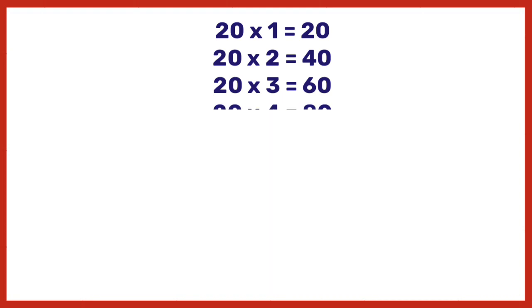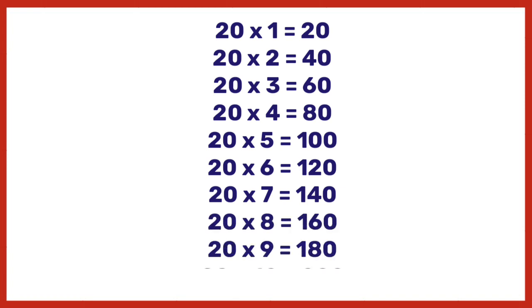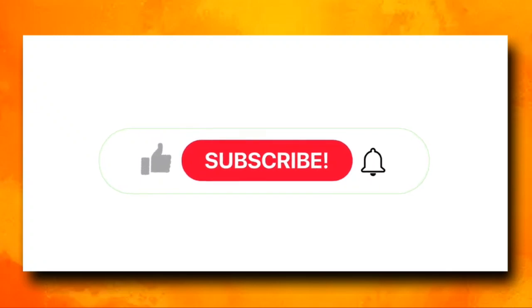20 times 1 is 20, 20 times 2 is 40, 20 times 3 is 60, 20 times 4 is 80, 20 times 5 is 100, 20 times 6 is 120, 20 times 7 is 140, 20 times 8 is 160, 20 times 9 is 180, 20 times 10 is 200.